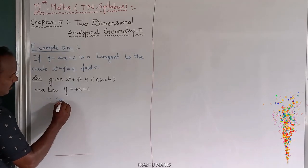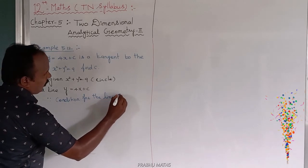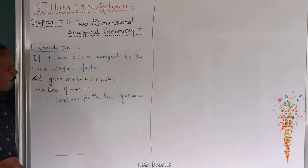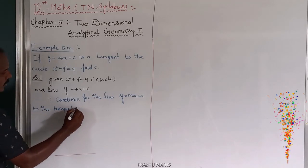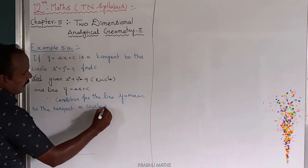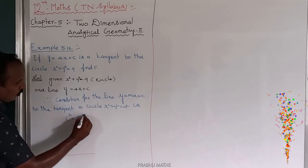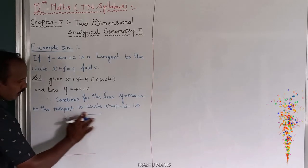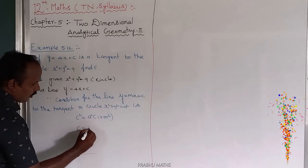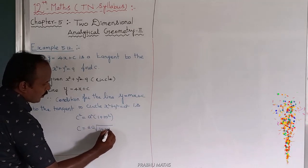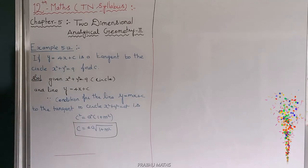The condition for the line y equals mx plus c to be tangent to the circle x squared plus y squared equals a squared is: c is equal to plus or minus a times root of 1 plus m squared. That is the condition of the tangent of a straight line under a curve.